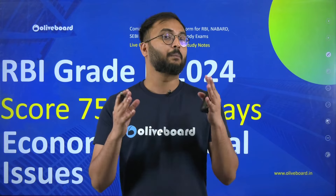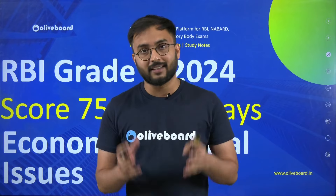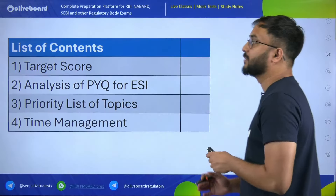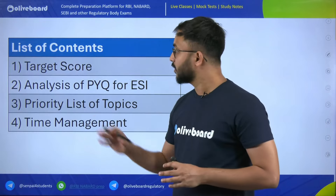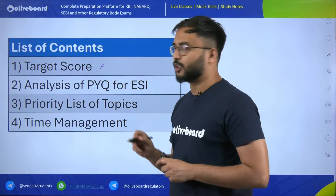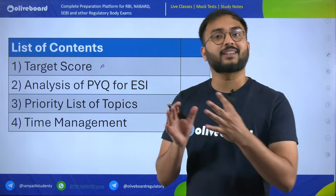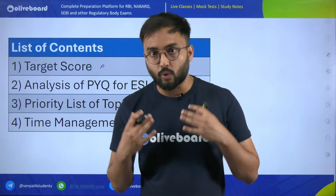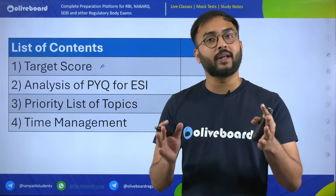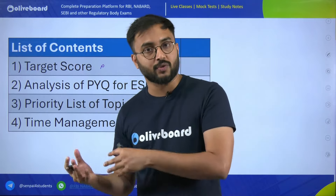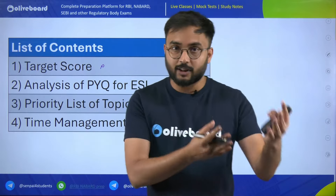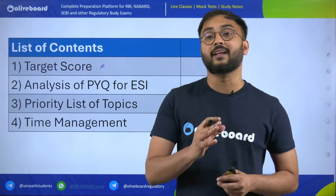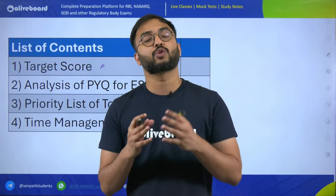How can you score 75 marks? Please guide us. That's why we are bringing this particular session. We'll directly discuss how we can score maximum in ESI through the following list of contents. First we'll discuss about target score, but to arrive at a target score — as you are going for RBI grade B exam — if you go in blind without knowing what the previous year cutoffs are, it is very difficult to clear phase 1 and especially phase 2 exam.